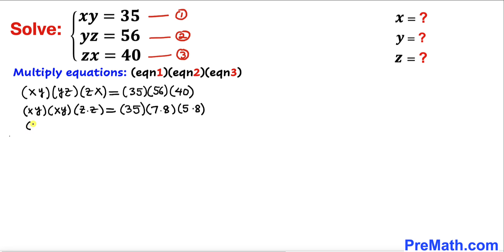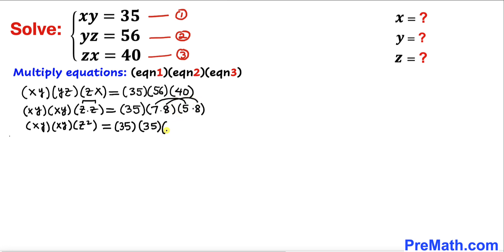On the left-hand side we get xy times xy, which is (xy)², and z times z, which is z². On the right-hand side we have 35, and then 7 times 5 is 35, and 8 times 8 is 64. So the right-hand side becomes 35 times 35 times 64.